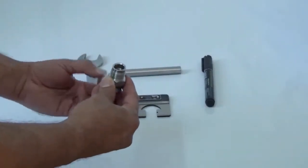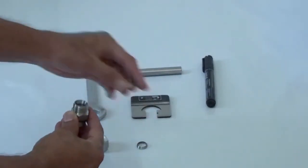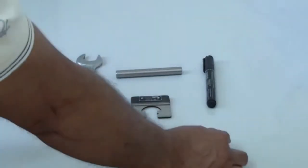The Well-Lock Tube Fitting consists of a nut, a back ferrule, a front ferrule, and the body.